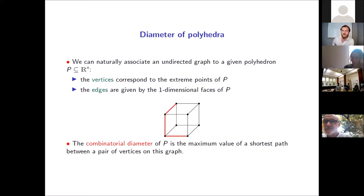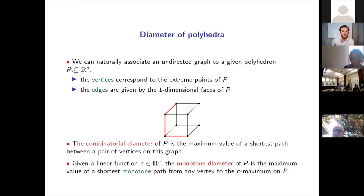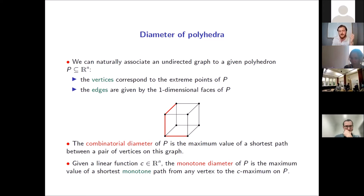This is related to the behavior of the simplex method because the simplex method traces out a path on this graph. If we want some indirect way of understanding how many pivots the simplex method might take, we glean information by knowing how long these paths can possibly be. We can further enrich this notion by giving it a linear function, then study the monotone diameter — the maximum value of a shortest monotone path from any vertex to the c-maximum, where steps must strictly increase the objective function.